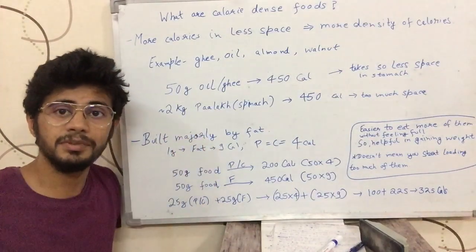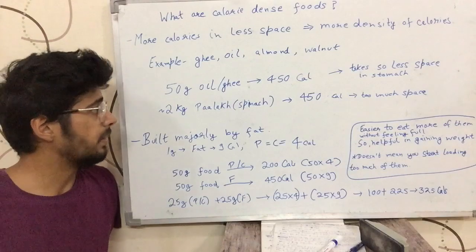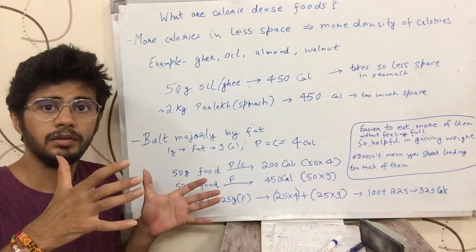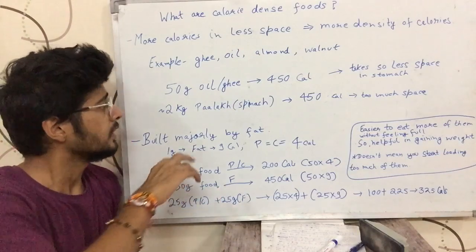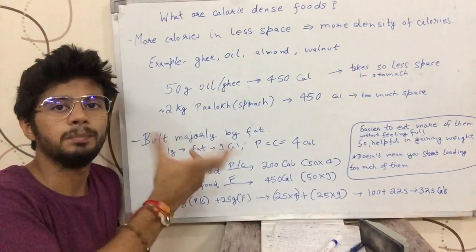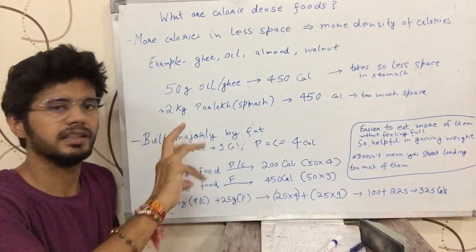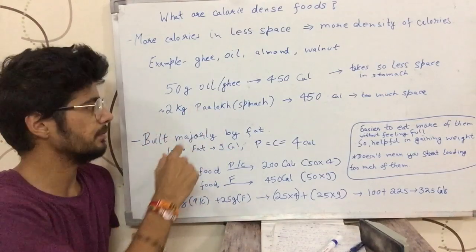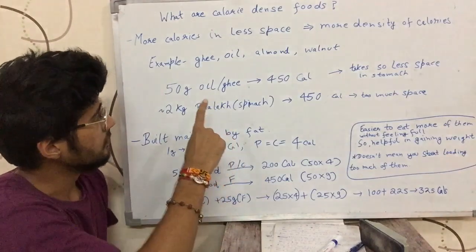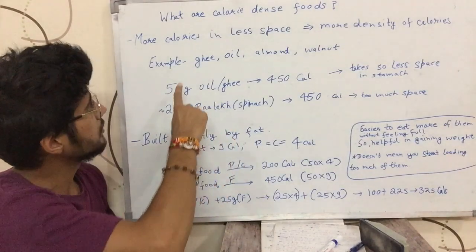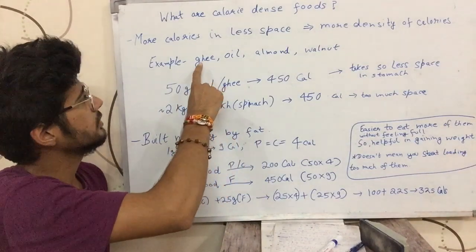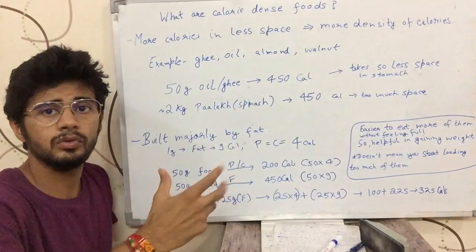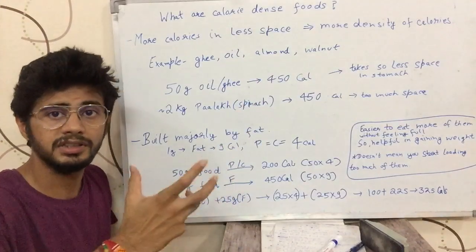Fat is calorie dense — fewer grams carry many calories. Wheat is calorie sparse — it takes a lot more volume for the same calories. Foods like meats and oil are calorie dense — they pack in a lot of calories.